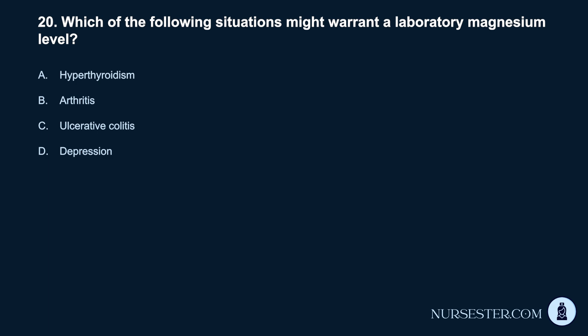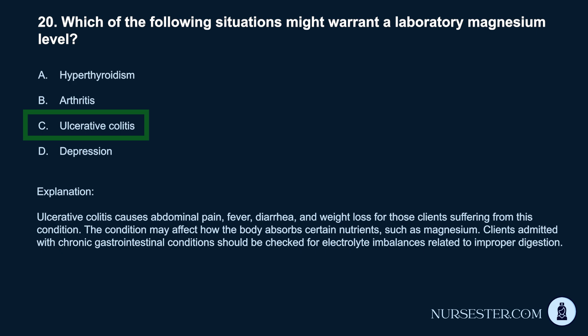Question 20. Which of the following situations might warrant a laboratory magnesium level? a. Hyperthyroidism. b. Arthritis. c. Ulcerative colitis. d. Depression. Correct answer: c. Ulcerative colitis. Ulcerative colitis causes abdominal pain, fever, diarrhea, and weight loss. The condition may affect how the body absorbs certain nutrients, such as magnesium. Clients admitted with chronic gastrointestinal conditions should be checked for electrolyte imbalances related to improper digestion.